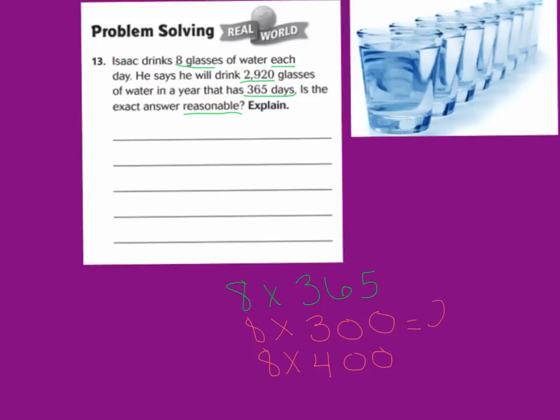8 times 3 is 24, with our two zeros, 2,400. And 8 times 4 is 32, with our two zeros, is 3,200. Now, let's see. Is our exact answer reasonable? Is 2,920 between 2,400 and 3,200? Yes, it is. So we can say, yes, our exact answer is reasonable, because 2,920 is between 2,400 and 3,200.